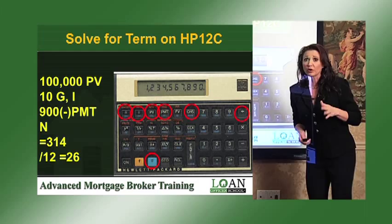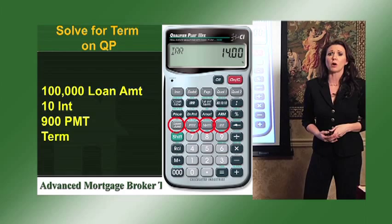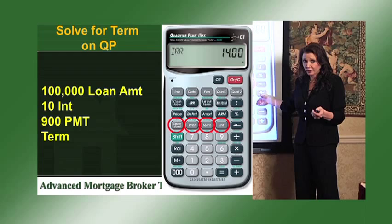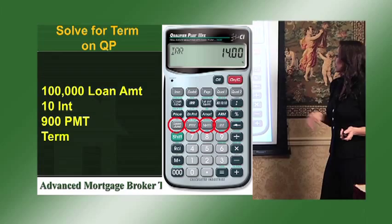Next is solving for the term on the Qualifier Plus. Same philosophy: 100,000 loan amount, 10 interest, 900 payment. This calculator is really smart — you don't have to enter the payment as a negative, just 900 payment. Then hit Term and the answer is going to be 26 years.